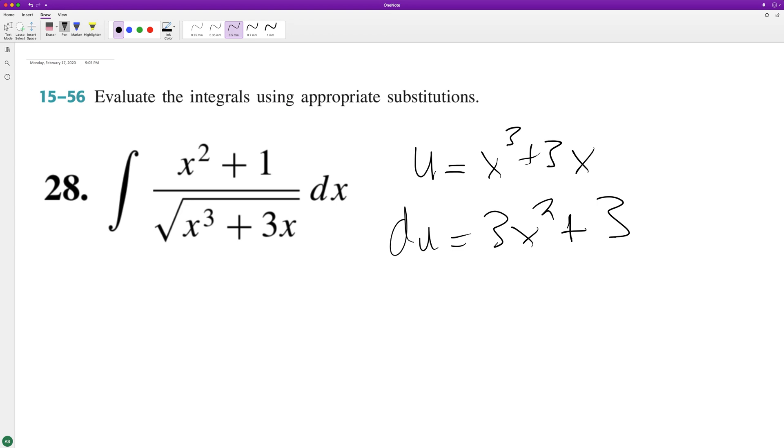So if you look here, this is the same as the top if you factor out a 3. So to get du equal to dx, we need to multiply it by one third.